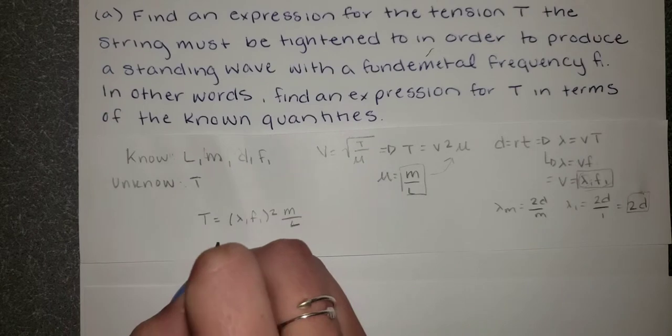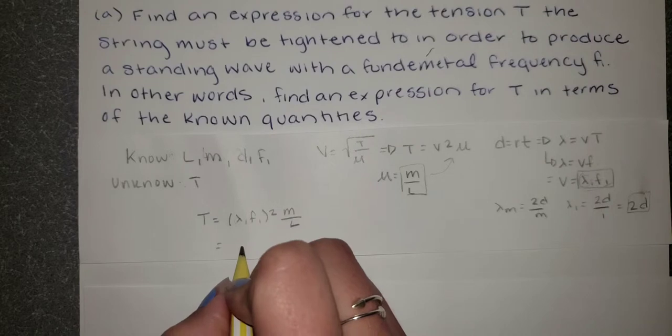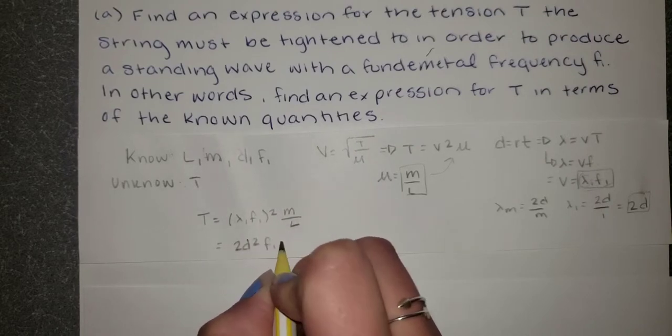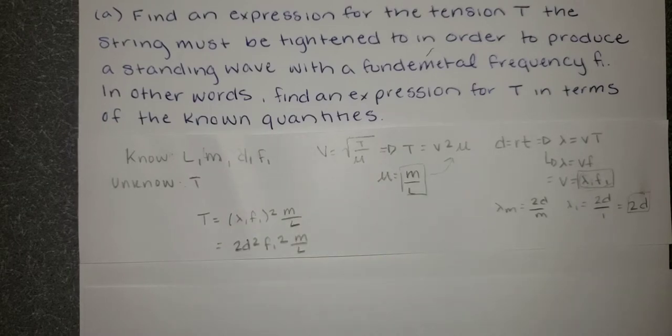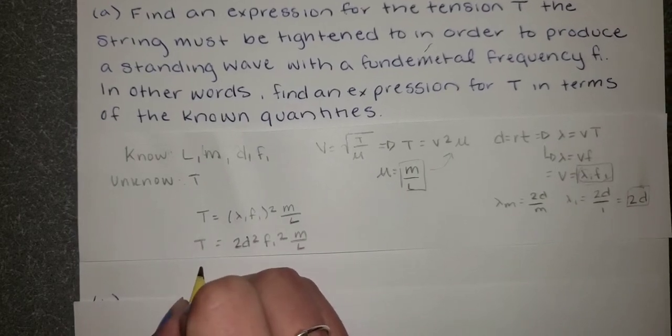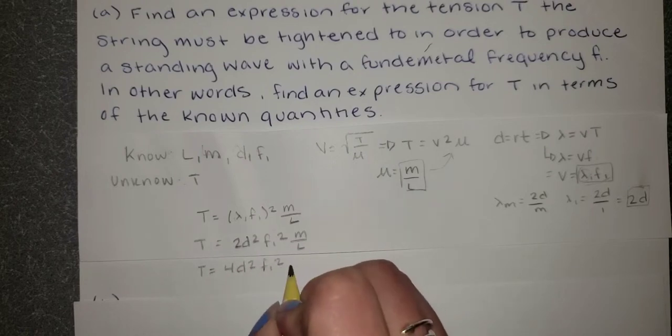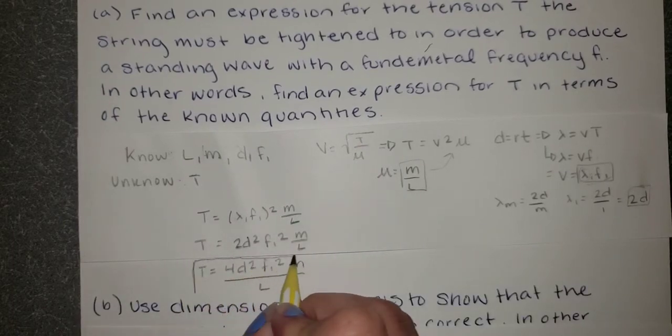Or to write it again with this new expression for lambda, we're going to have 2d squared times frequency 1 squared mass over length. And this is still solving for T. So that's going to boil down to tension is equal to 4d squared f1 squared mass over length. And that's going to be your expression for T.